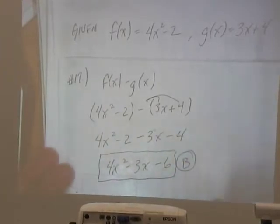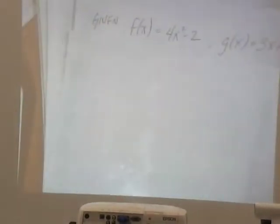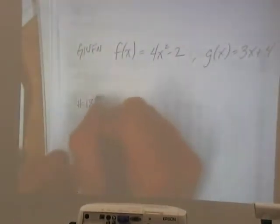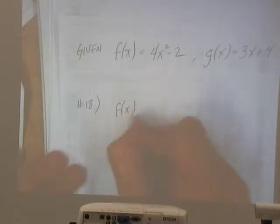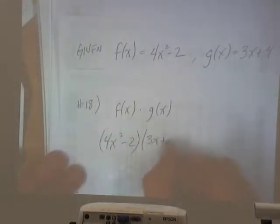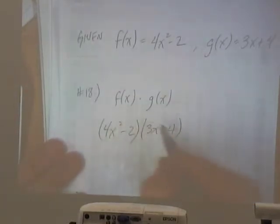All right, and 18, give the expression for f of x times g of x in simplified form. So we're just going to multiply the two binomials.